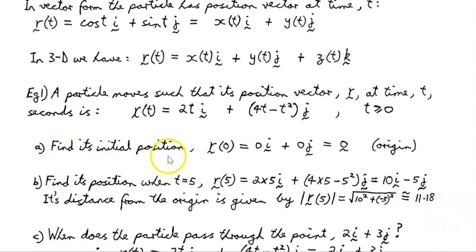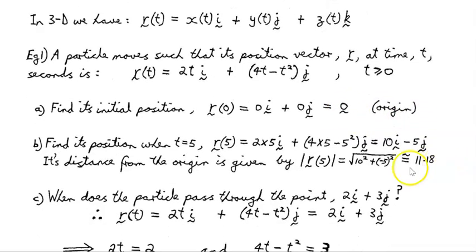Find its initial position. Well, initial position is at t = 0. When we substitute zero in there, we get zero for the first component and substitute t in here, we get zero for the second component. So what we have is a zero vector. The particle is at the origin.